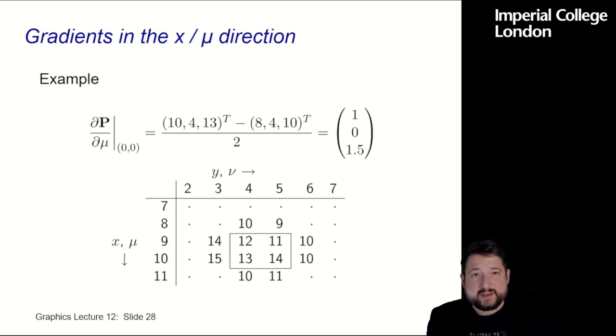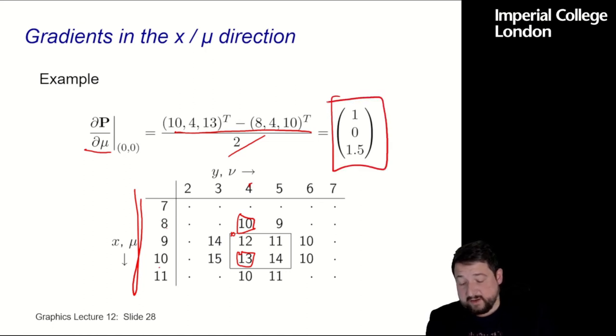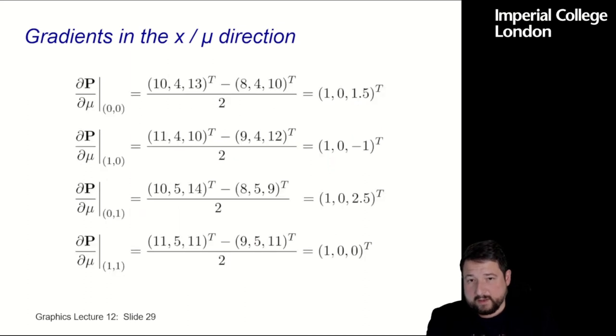Now, the first thing I need are gradients in μ and ν direction, now μ and ν is equivalent to x and y in our case here, so this makes things a little bit easier, and again, like with the cubic spline patches, I use central differences. So, what I want is that point, say (0,0), with respect to μ, so that direction, which means the central difference here is that point, I think, (10,4,13), so that point, minus (8,4,10), minus that point. So, this is this. Averaged is our central difference, which gives us our gradient vector in μ direction at that point, okay?